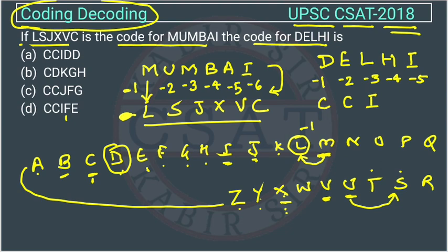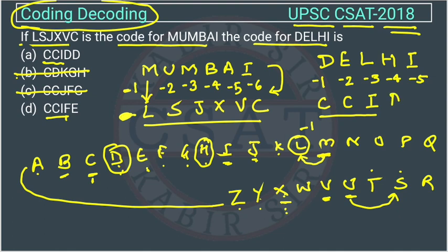From the options, the answer starts with C, C, I — so we can eliminate options B and C. The answer will be from A or D. Next letter is H: four steps backward gives D. So option A has D here, while option D has F, so it cannot be correct. The answer is option A. No need to convert the full word — from options we can find the answer.